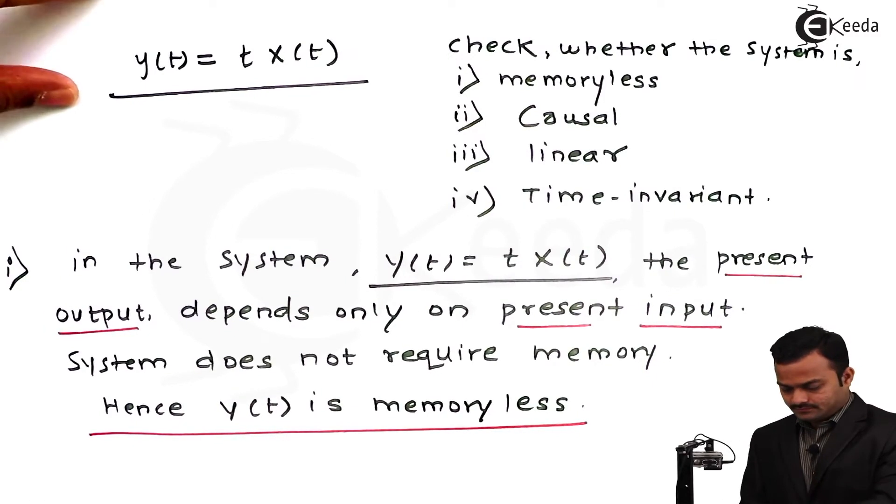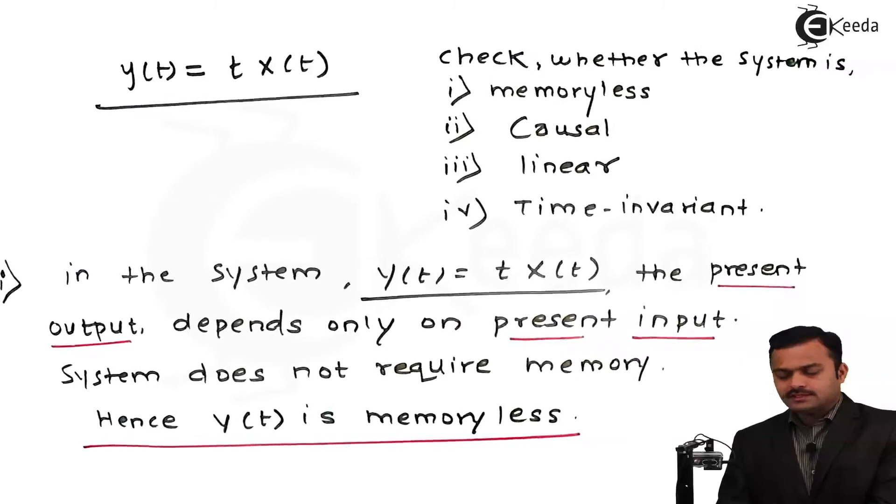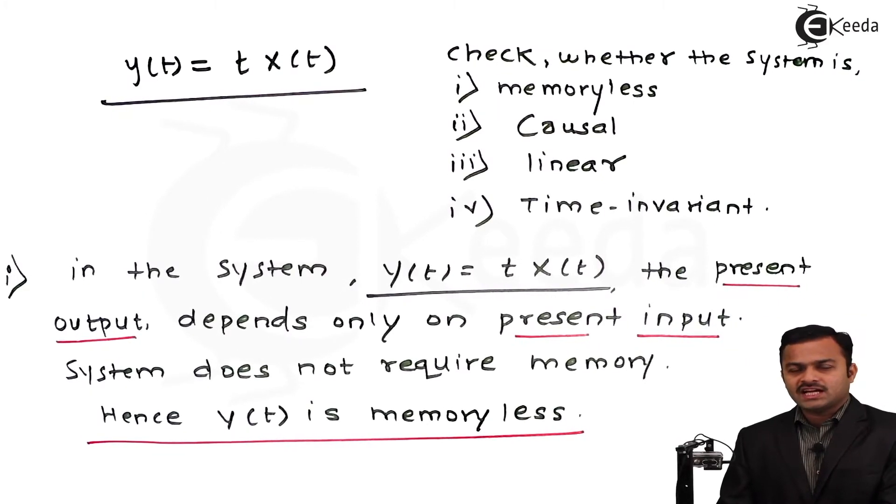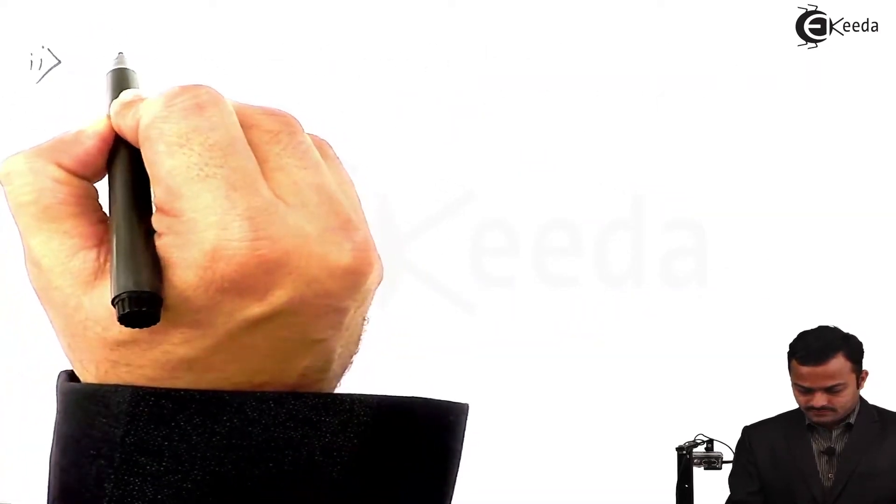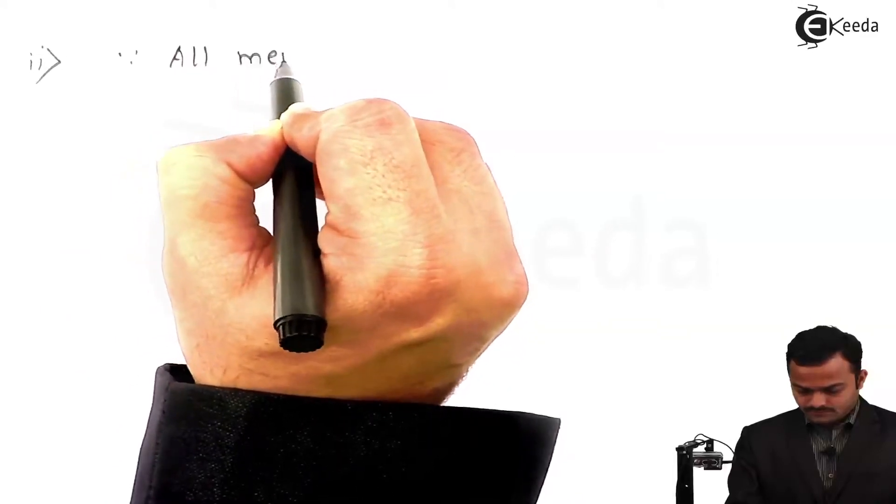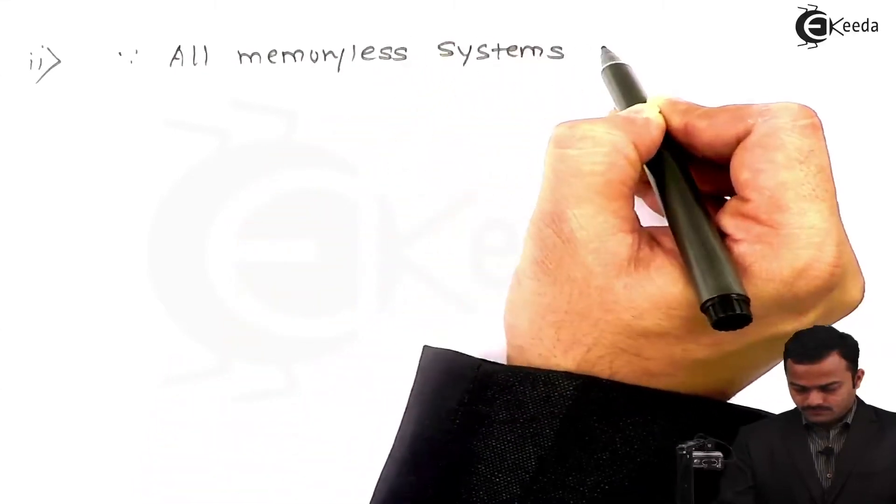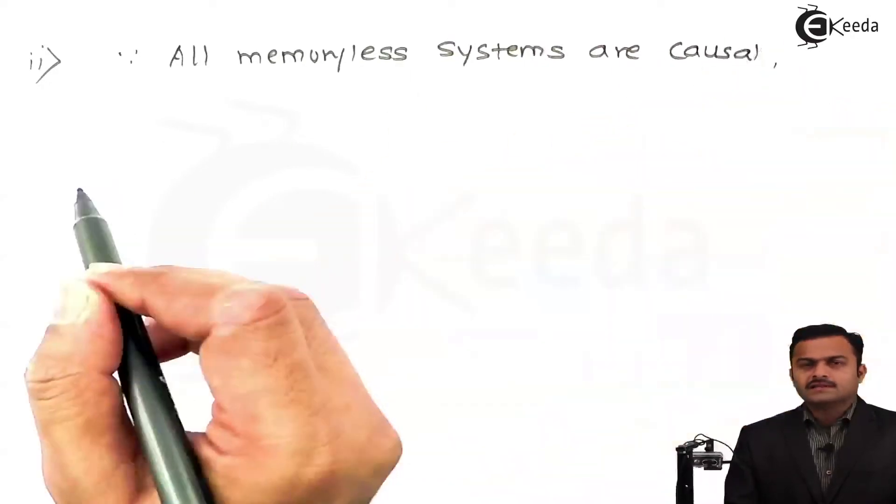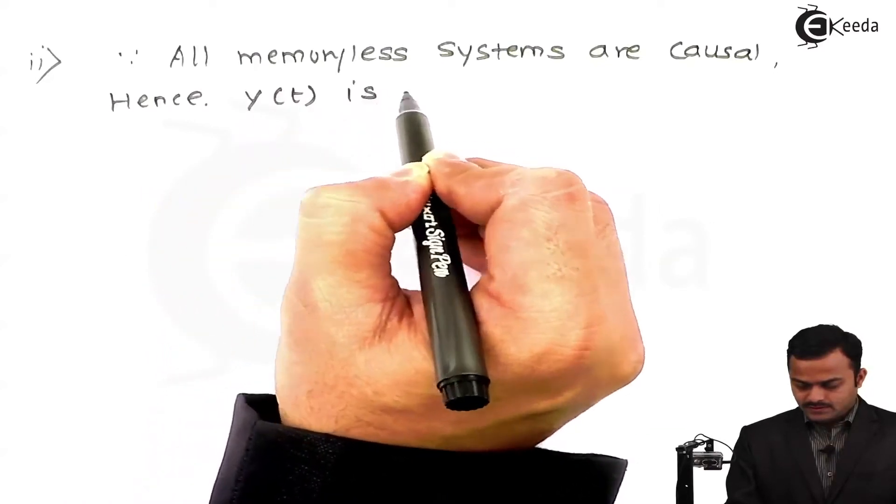We have discussed the first criteria that the system is memoryless. Let's go to the next, that is the causal system. For a system to be causal, we need to have output which depends on present and past values. Here it depends on the present values only. So yes, the system given is a causal system because we have seen that all memoryless systems are causal. Hence, I can say y(t) is a causal system.